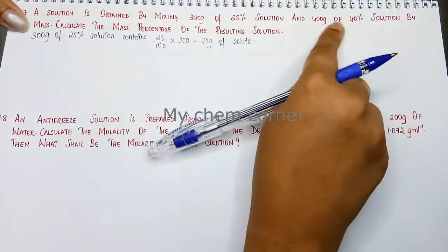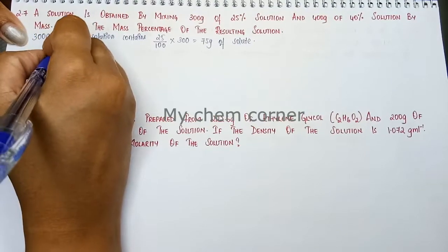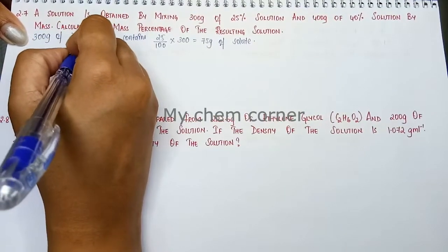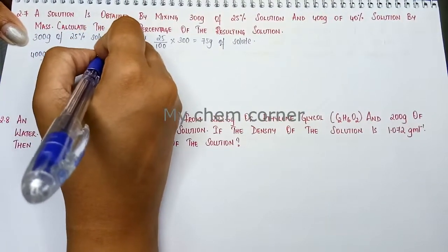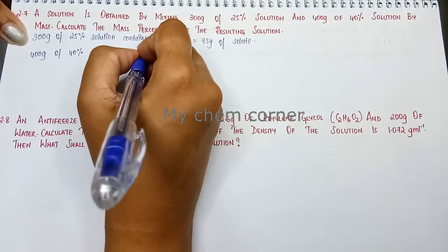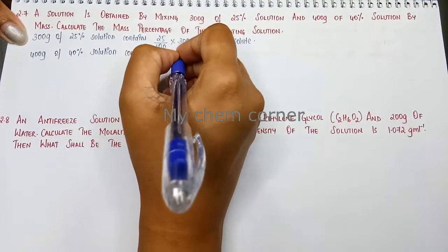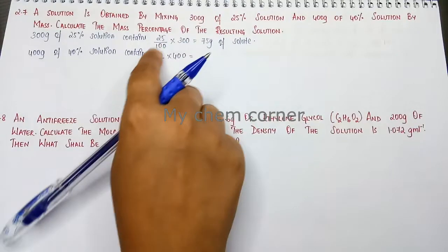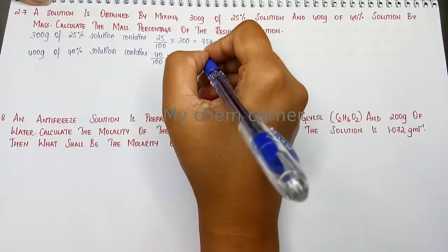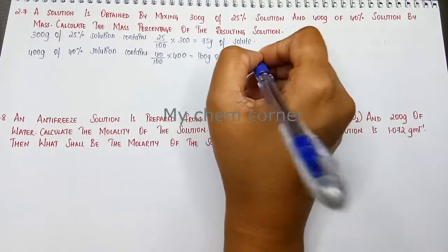Same way when we do for 400 grams, we can write that 400 grams of 40% solution contains 40 by 100 into 400. When I simplify this, I will get 160 grams of solute.